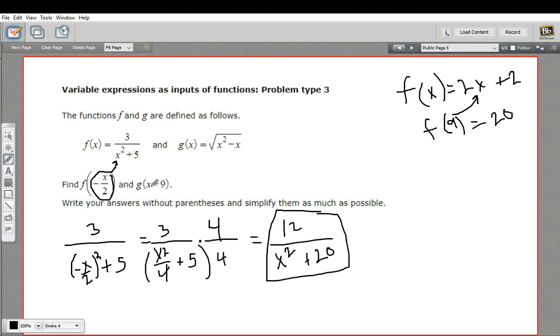Let's try another. We've got find g of x plus 9, and g(x) is the square root of x squared minus x. And got to be careful here, this is our input, but we've got two places to put it in. So we're going to have this quantity squared, and then we're going to have minus that quantity.